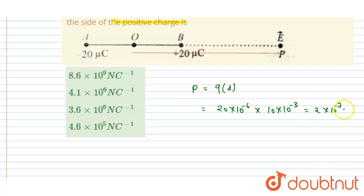So if you see this is 2 into 10 to the power minus 7 is the dipole moment, right? And we want the electric field at point P because of this dipole moment, right? So yeah, this will be coulomb meter.